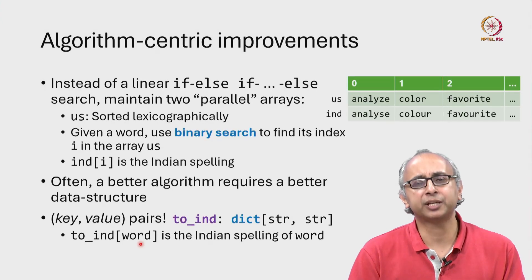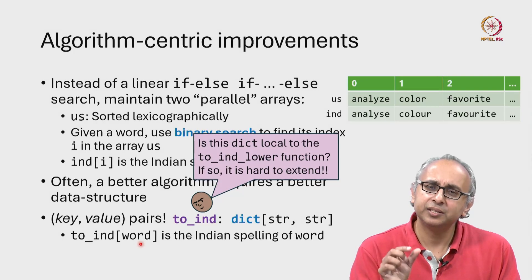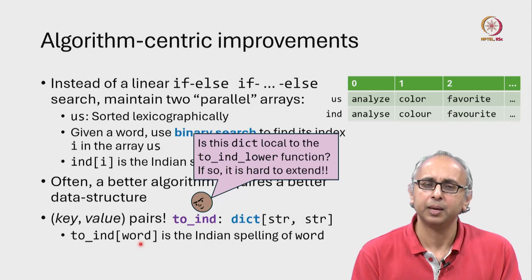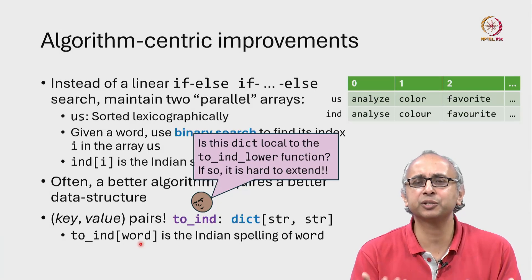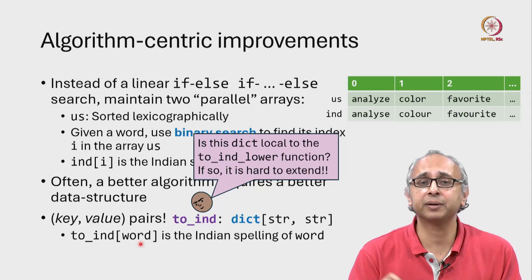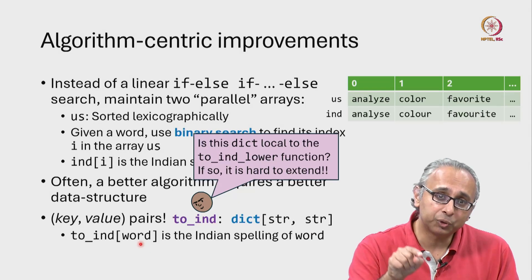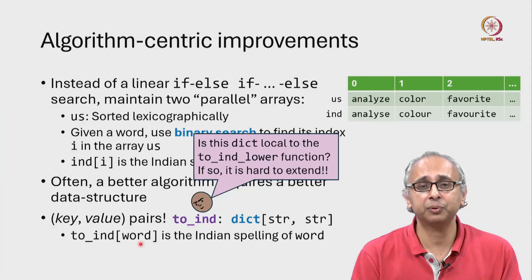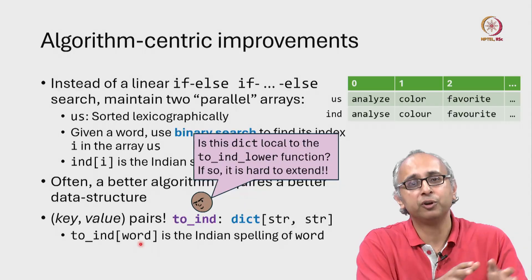Our friend looks at this particular proposed solution and has a little question. Is this dictionary going to be a local variable in our 'to_ind_lower' function? Because if it's a local variable, our friend is raising a valid concern — it's going to be difficult to extend. If we suddenly realize there are a few more words in American spelling that we want to translate into Indian spelling, we'd have to go into the code and extend that dictionary and re-run our program. Isn't there a more flexible way to separate our code from our data?